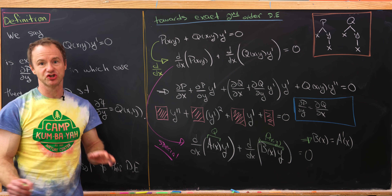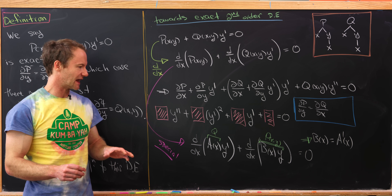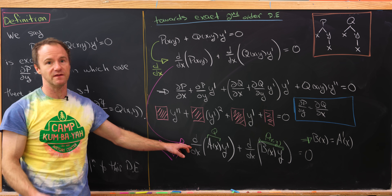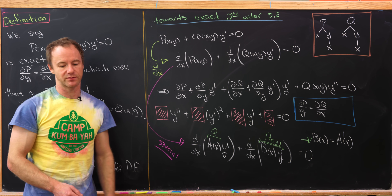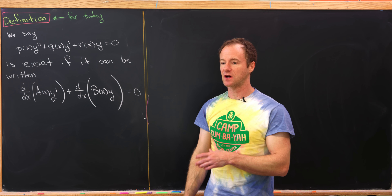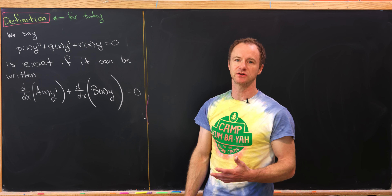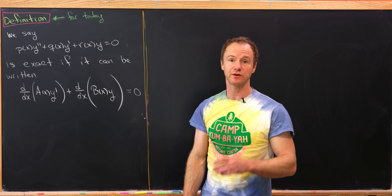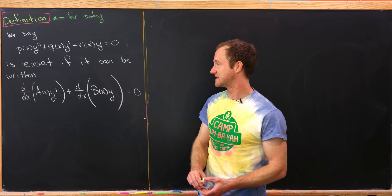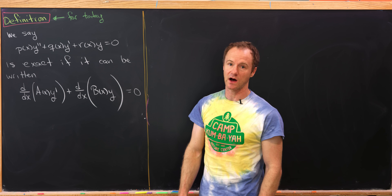We'll take a second-order differential equation to be exact — using a loose definition just for today, and I want to underscore that. As we saw, looking at more general exact second-order differential equations involves quite a lot of work, which is probably a good hint as to why it's not covered in a standard first course in differential equations. So our definition: a differential equation P of x times y double prime plus Q of x times y prime plus R of x times y is exact if it can be written as the total derivative of A of x times y prime plus the derivative of B of x times y equals zero.